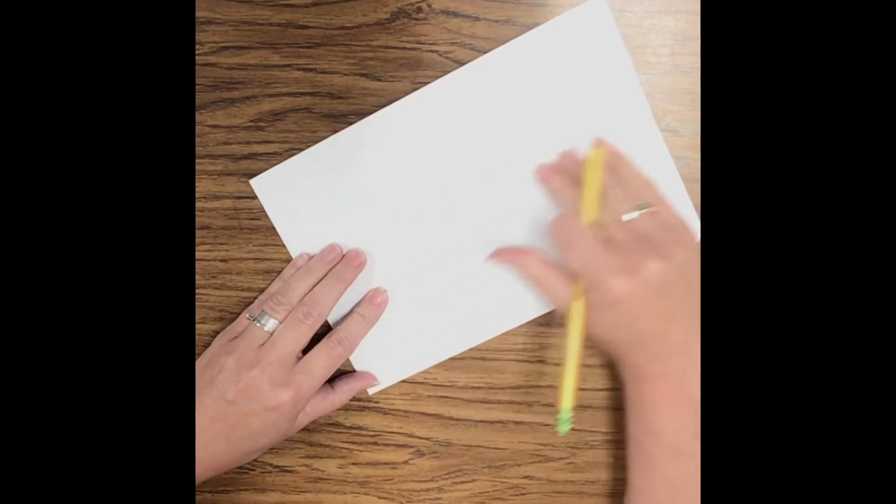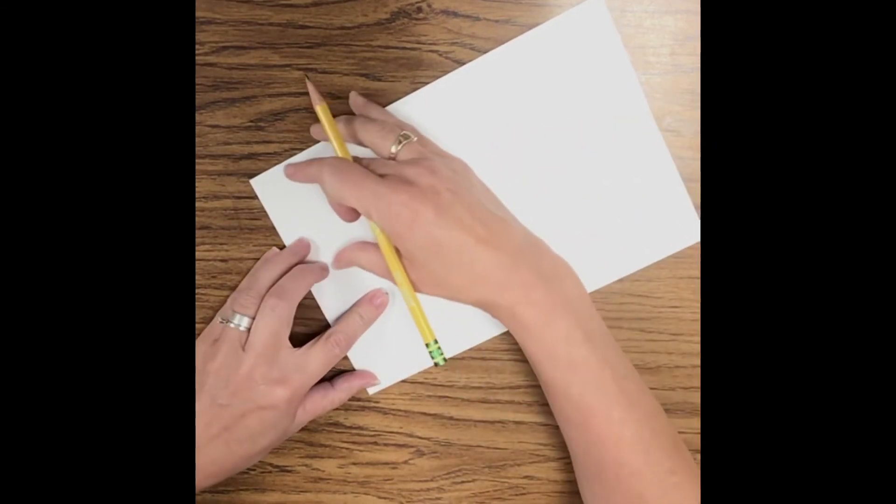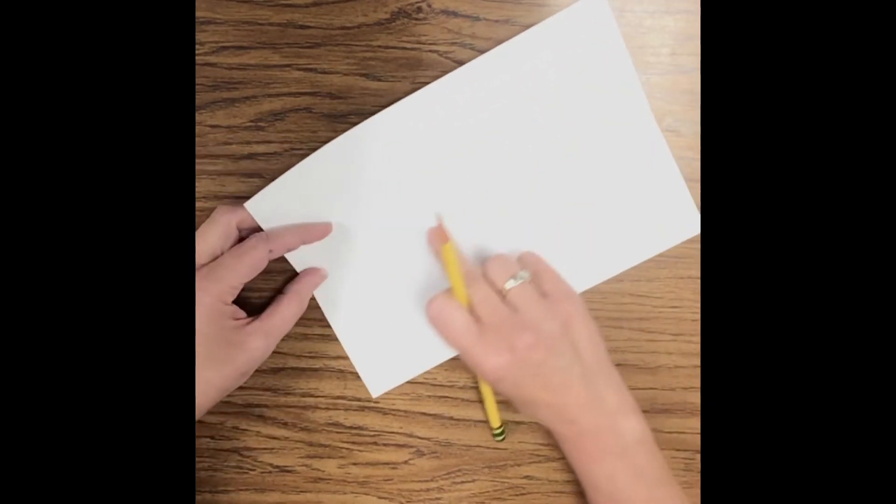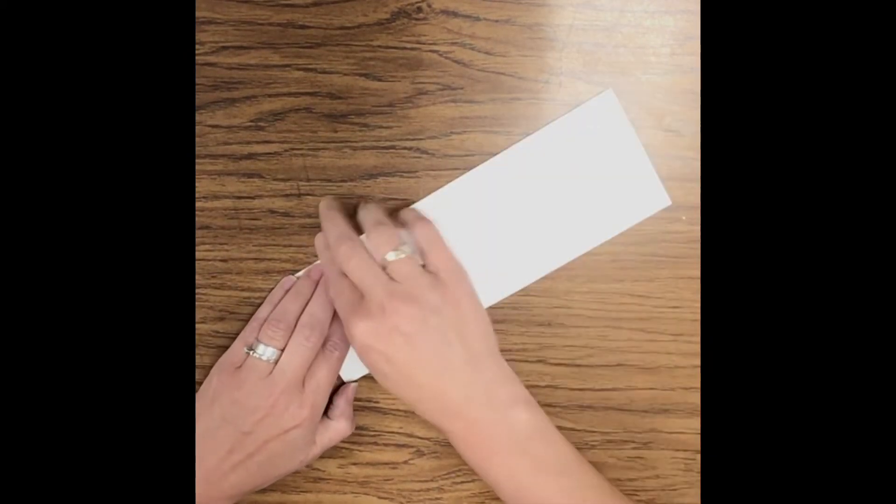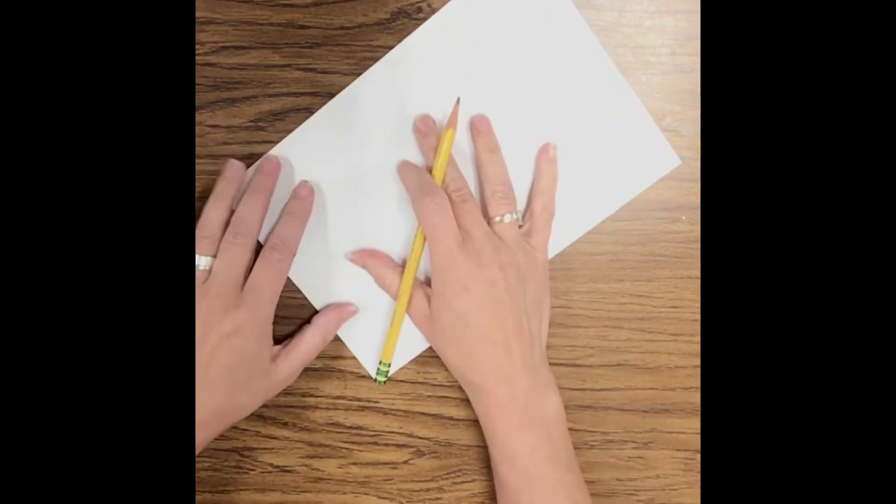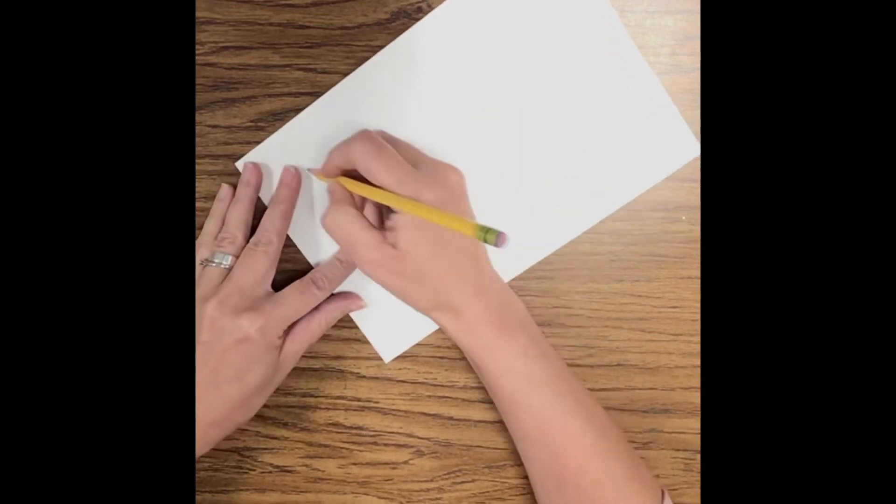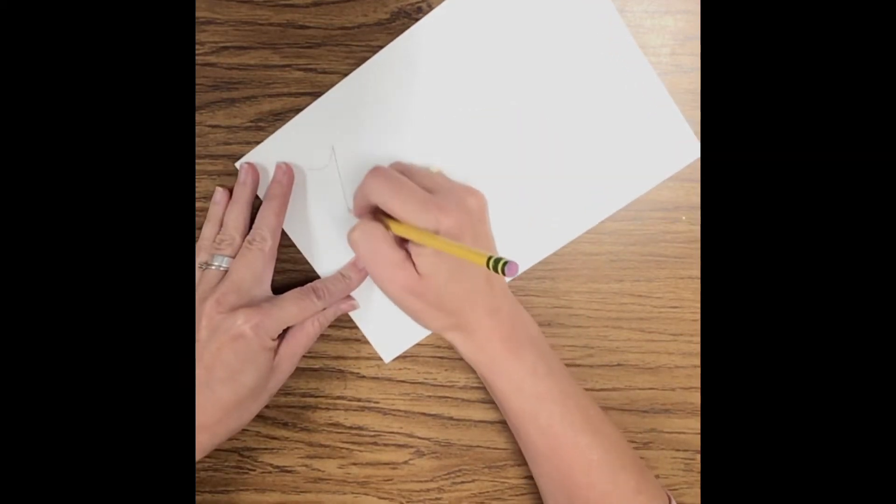So I'm gonna write Michelle and I'm just gonna do it on this top half and I need to make sure that my letters are dropping down to that middle space. Okay, so I'm gonna write my name.